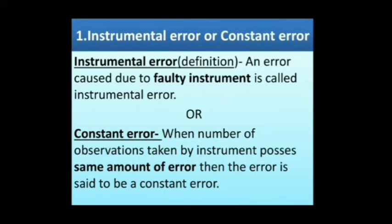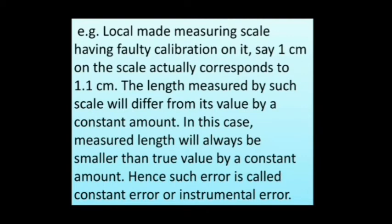Instrumental error: An error caused due to a faulty instrument is called an instrumental error, also known as a constant error, when the number of observations taken by the instrument possess the same amount of error. For example, a locally made measuring scale having faulty calibration where 1 cm on the scale actually corresponds to 1.1 cm. The length measured by such a scale will always be smaller than the true value by a constant amount. Hence, such error is called a constant error or instrumental error.